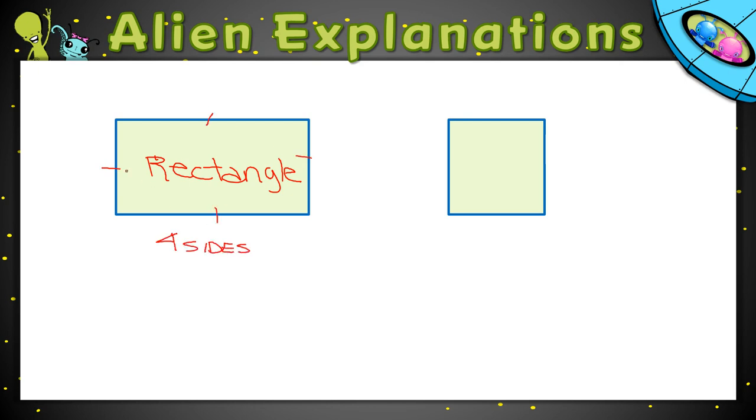We know they have four corners. One, two, three, four corners, and you might also sometimes hear these called vertices. One is a vertex. If we have more than one, it's vertices.